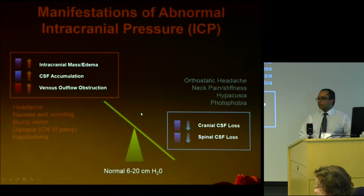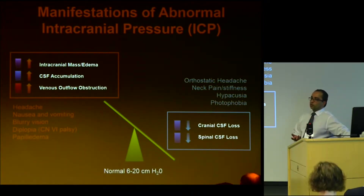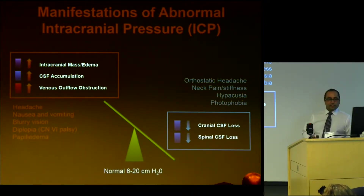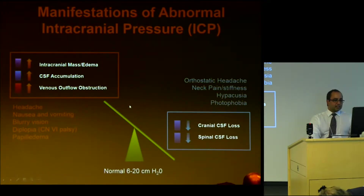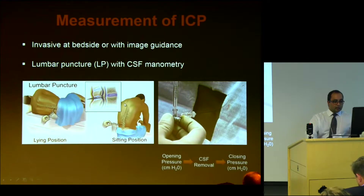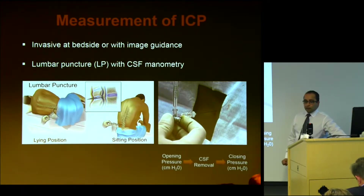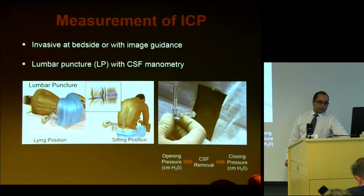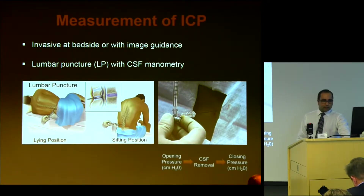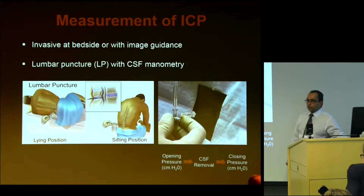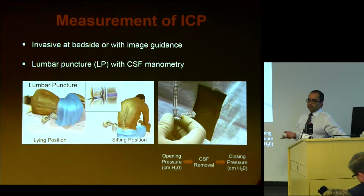The basic idea is: in a patient presenting with signs and symptoms of elevated intracranial pressure, can we use MRI to non-invasively assess their pressure status? Traditionally, this is measured clinically with lumbar puncture and opening pressure measurements — the spinal canal is accessed with a needle, a manometer is hooked up, and we check the pressure. Typically, we'll take off some CSF for sampling and then check the closing pressure.